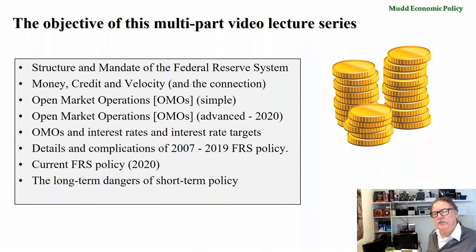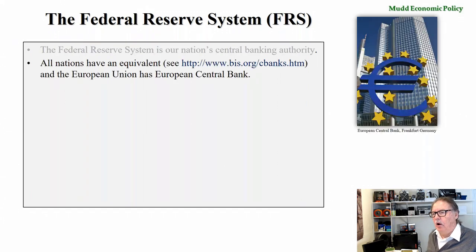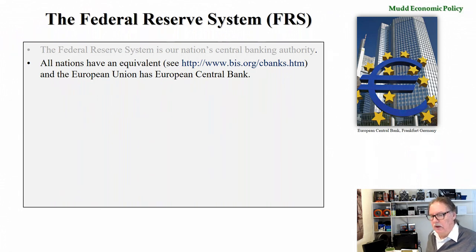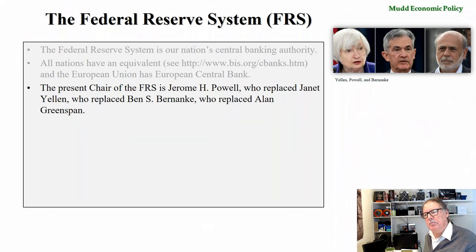Let's start by discussing the structure of the Federal Reserve System. The Federal Reserve System is our nation's central banking authority, or simply our central bank. All countries have an equivalent central bank. The picture here is of the European Union's European Central Bank. The present chair of the Federal Reserve System is Jerome Powell, who replaced Janet Yellen, who in turn replaced Ben Bernanke, who replaced Alan Greenspan.